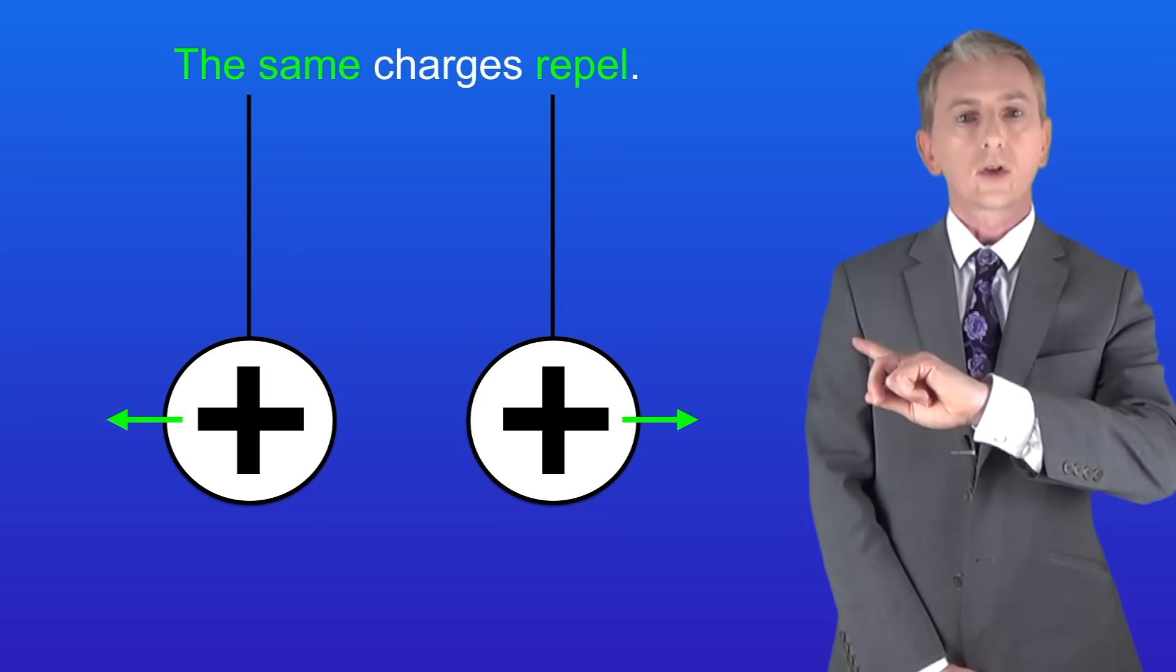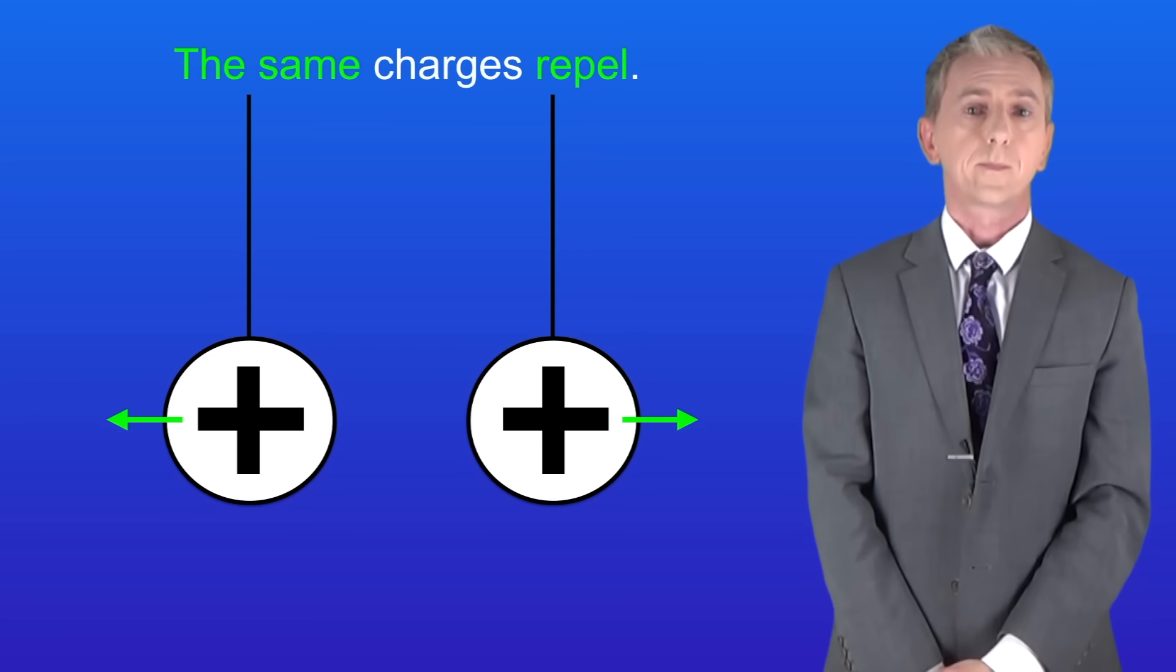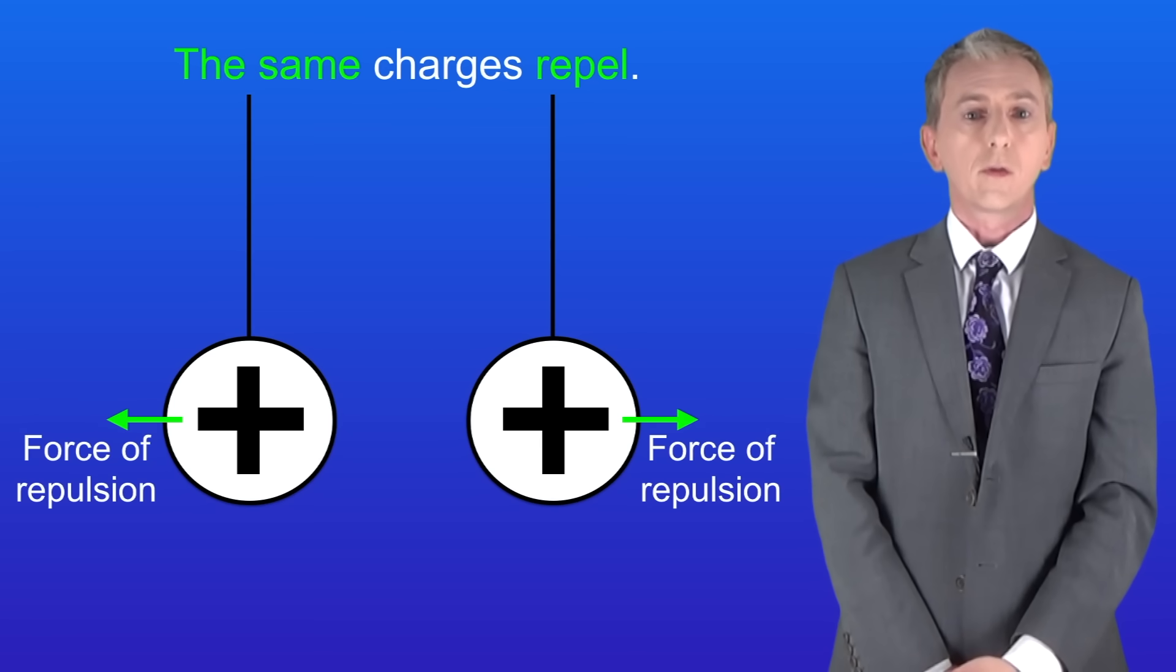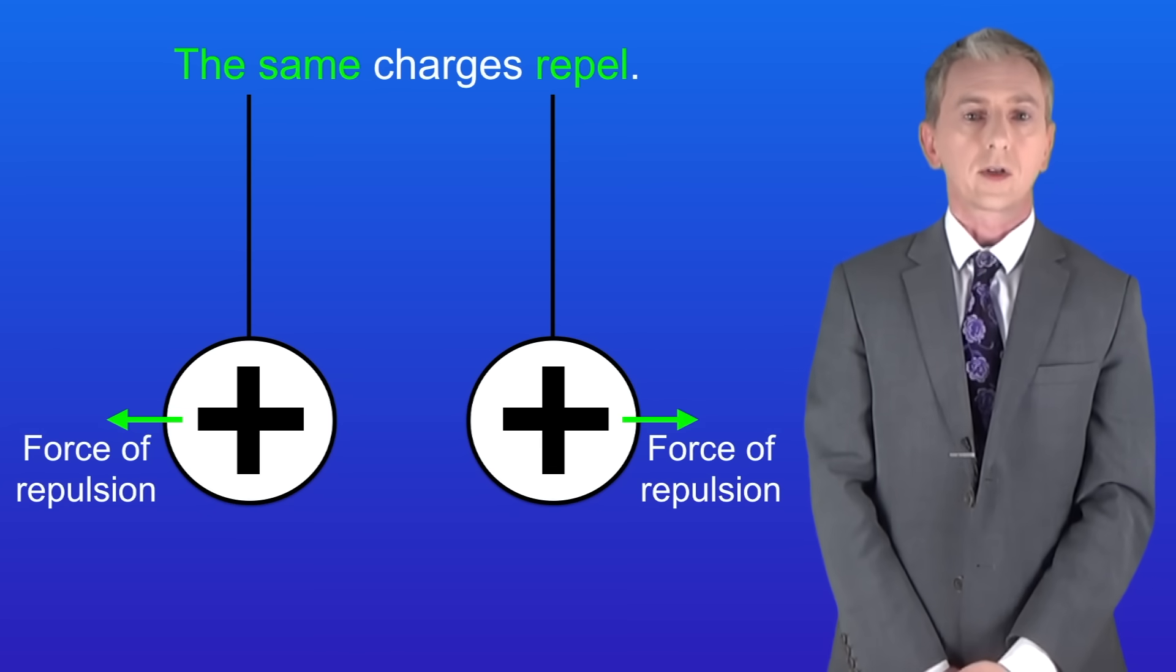Here we've also got two plastic spheres but this time they're both positively charged. And this brings us to our second point. Objects carrying the same type of charge repel. So in this case there's a force of repulsion between these two spheres and again this is a non-contact force.